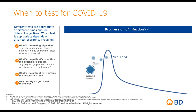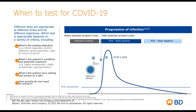Viral load is essential when determining what type of testing to use. I like to use the analogy of your body being a soccer field and the virus being a tennis ball. If you're tasked with filling a bucket with tennis balls and there are only four or five on the field, you'll have a hard time detecting them. What molecular PCR testing does is amplify those tennis balls — instead of five or six, you now have hundreds of thousands. This allows PCR testing to pick up a positive very early on in the infection cycle.